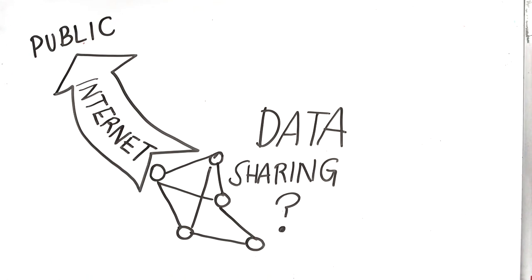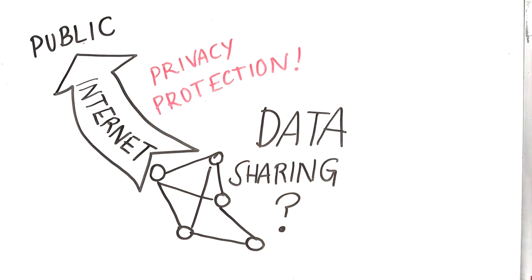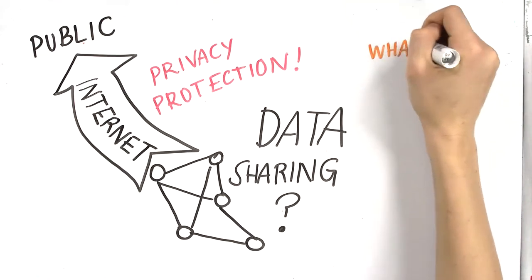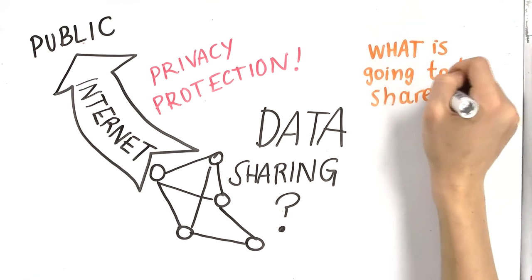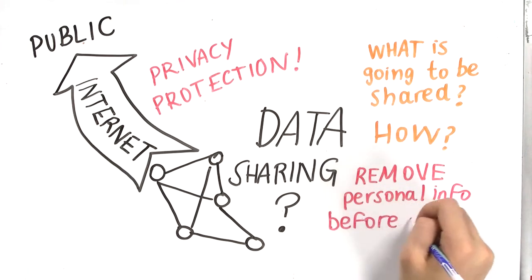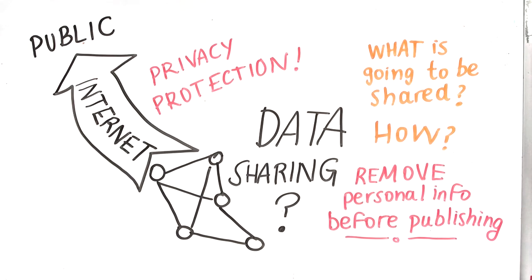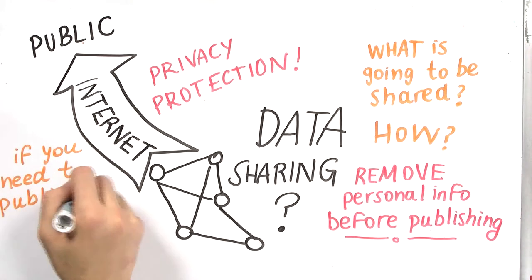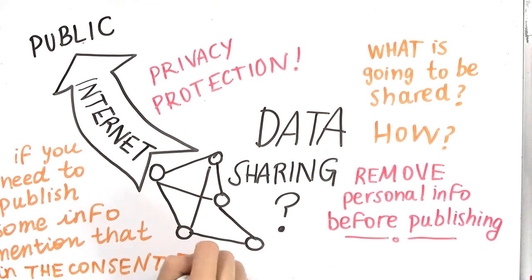Online data sharing has constantly posed a challenge to privacy protection. Therefore, if you decide to publish your data online, there are action steps you need to take. First, you need to include what and how data would be shared in the consent form. Second, personal information, including name, address, birth date, and etc., should be removed before publishing. If there is certain information that you need to keep for your project, such as gender and age, say it in the consent form.